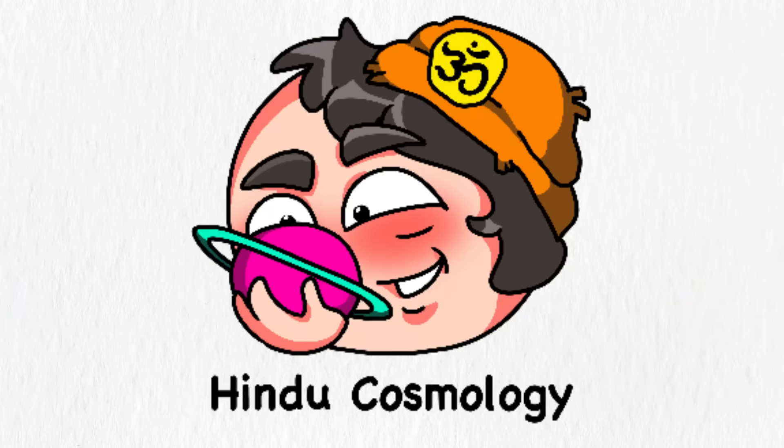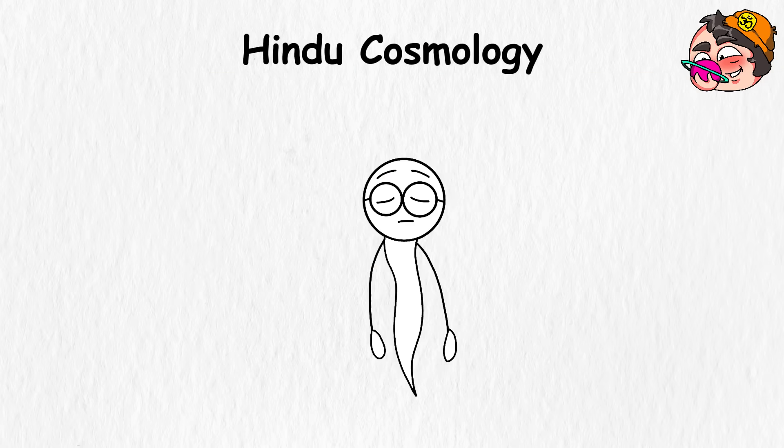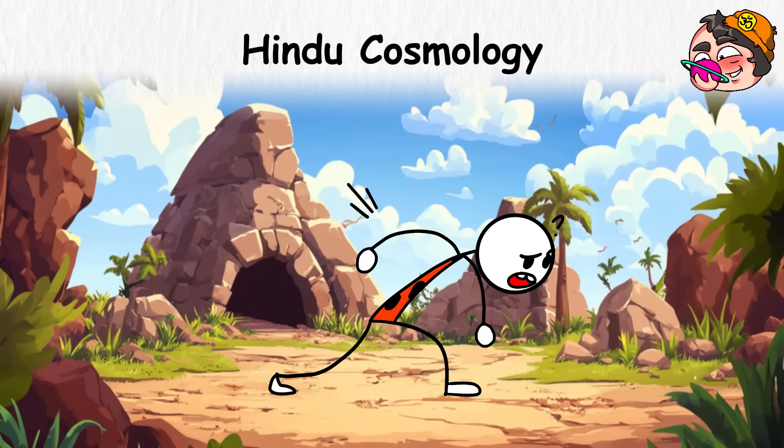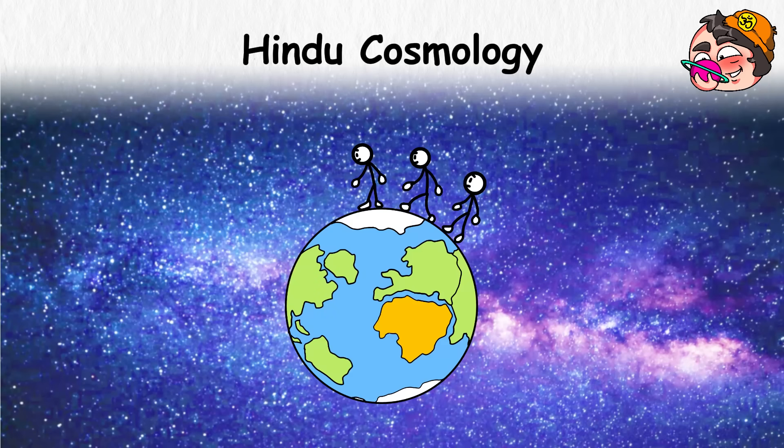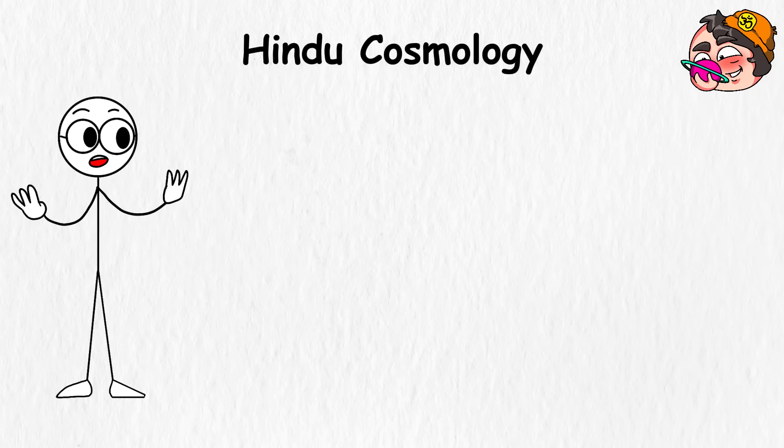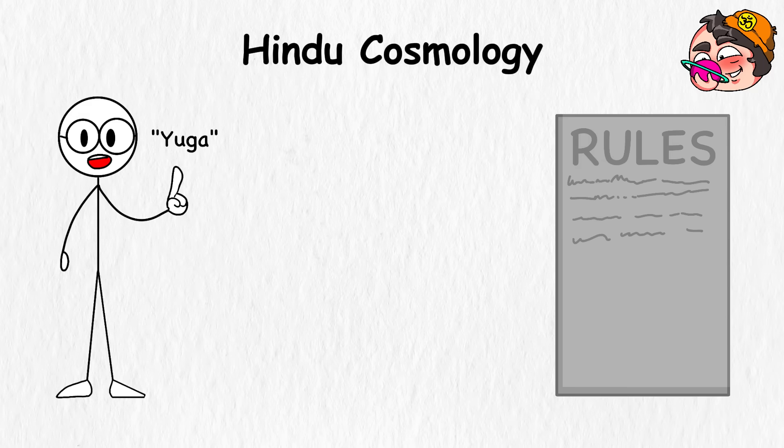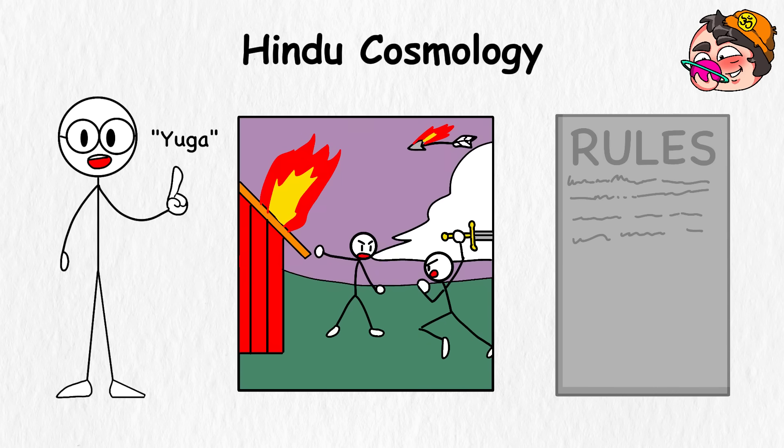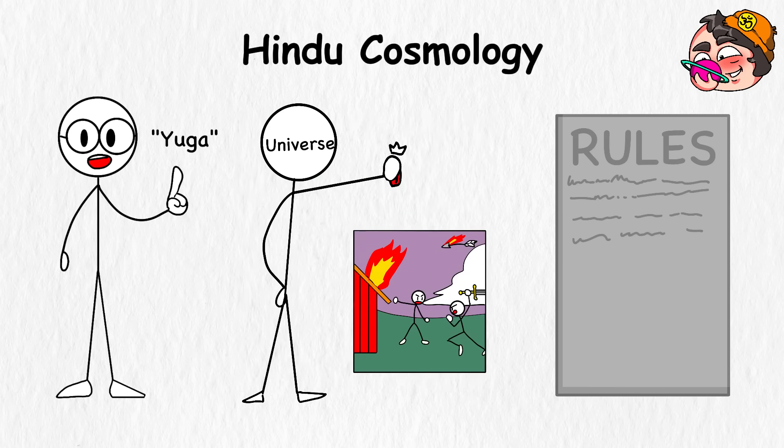Hindu Cosmology. Hindu tradition sees the world as a never-ending loop. Endless, repeating, and way longer than any science textbook timeline. According to this view, humans didn't appear once and evolve. We've shown up, disappeared, and started over more times than we can count. Each cycle, called a Yuga, comes with its own set of rules. People live, grow, build stuff, mess it up, and then the universe hits the reset button. Think of it like a cosmic school year. At the end of each one, everything gets wiped clean. Floods, fire, or time itself. And the next round begins.